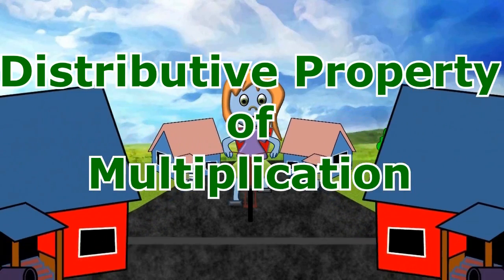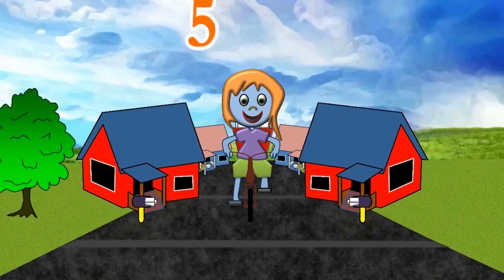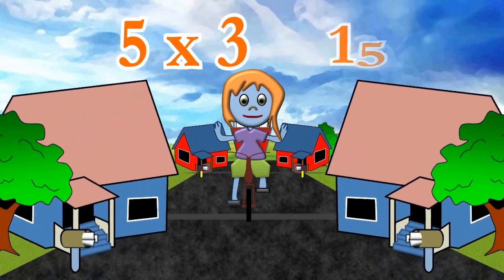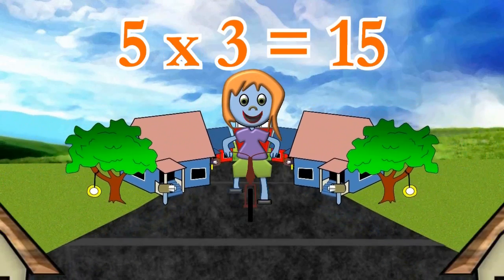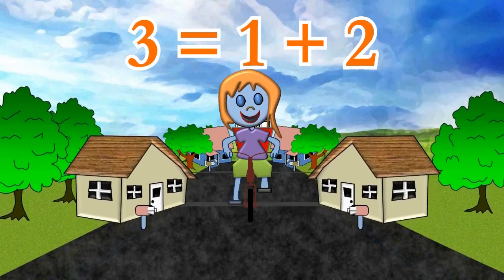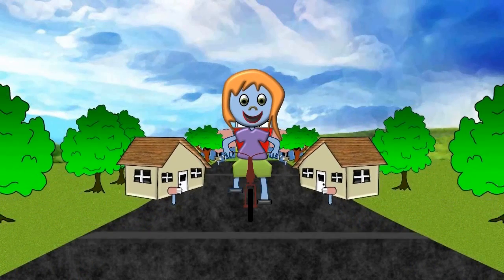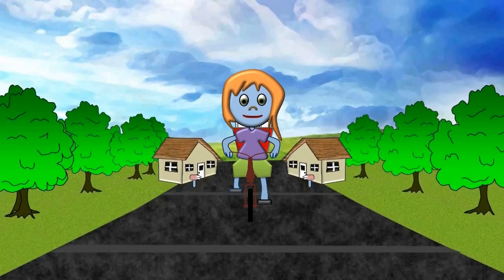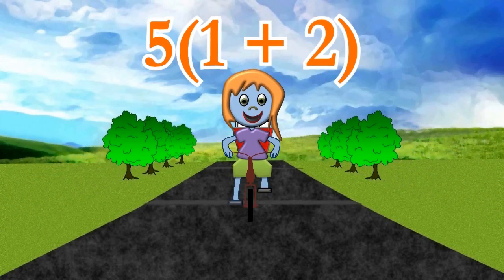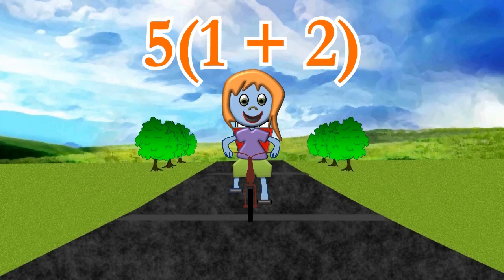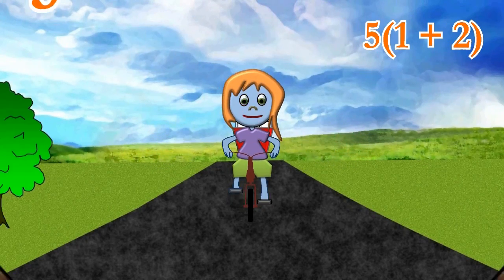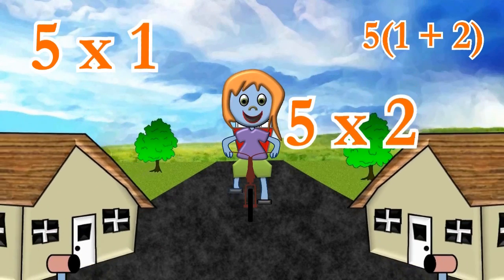Let me show you what I mean. If we have a simple problem like 5 times 3, which we all should know equals 15, we can actually separate the 3 into 1 plus 2, since 1 plus 2 equals 3. So 5 times 3 can actually be rewritten to look like this. Remember, a number or variable next to parentheses means multiplication. In other words, we would multiply 5 times 1 and 5 times 2.